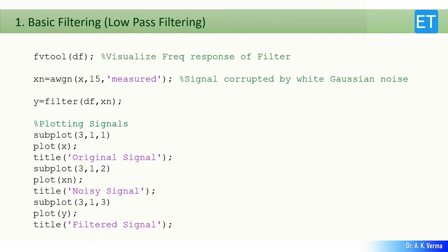Once executed, you get the dfilt object. To check whether the filter is realized correctly, you can execute the fvtool command to show the frequency response of the filter. X is my original signal. To corrupt it with noise, I add Gaussian noise using the awgn function, so XN is my corrupted or noisy signal. The value 15 here is the SNR — signal-to-noise ratio. A higher value means less noise is added; a lower value means more noise is added. I then filter the noisy signal XN using the filter command with the filter object df, and the denoised samples are stored in variable Y.